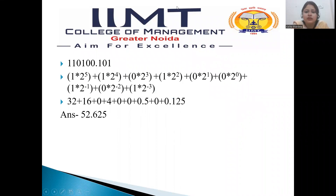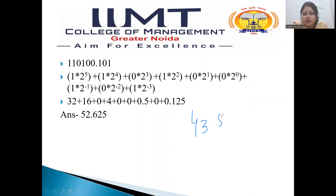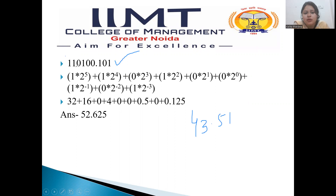Now one more thing — the examiner may also ask: just as I showed 43.57 converted to binary, you may also be asked to convert a binary point digit number into a decimal number. For the part before the point, we do the same as before — 0 into 2's power 0, 0 into 2's power 1, 1 into 2's power 2, 0 into 2's power 3, 1 into 2's power 4, 1 into 2's power 5. I have just added the 0.101 portion here.